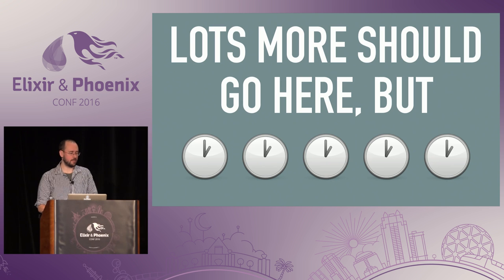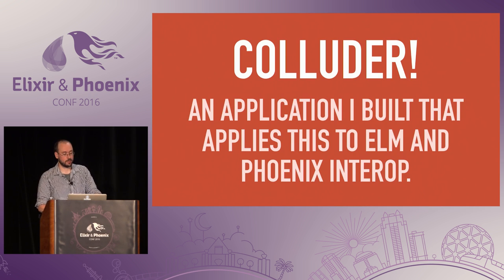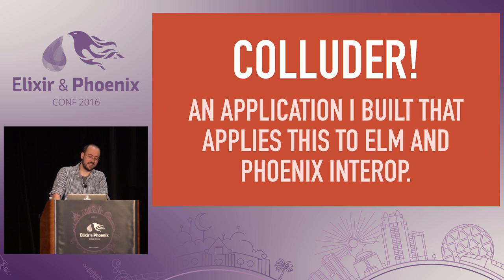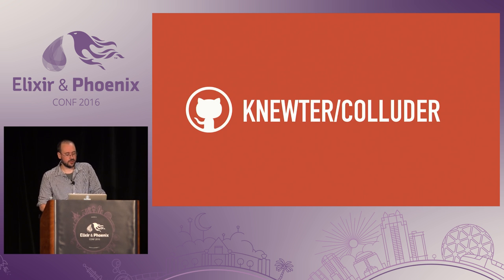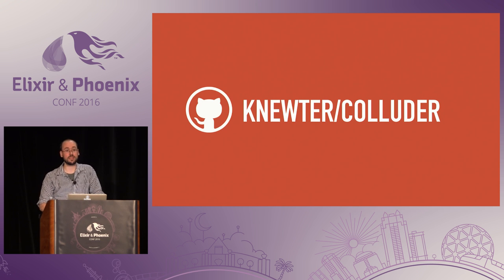I'm going to skip all the really confusing or hard-to-talk-about things with collaboration, but I'm glad to talk about them in the hallway. We'll go on and talk about an application I built in Elm and Phoenix. It exists as an introduction to doing real-time collaboration with these two amazing things. The reason I wanted to give this talk is because I'm really, really happy when I write Phoenix and Elm stuff — way happier than I've ever been before writing software. So this thing is called Colluder. You can get it on GitHub.